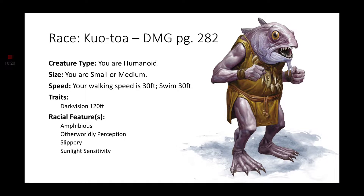Something I imagine for a Kuo-toa encounter: your party decides to do a stealth mission — everybody's invisible — and they walk into a chamber with chanting coming from it. There's a bunch of Kuo-toa with their arms raised, chanting to a statue of their god. As the players stop, so does the chanting. The Kuo-toa's arms lower, and suddenly their heads snap toward the entrance of the chamber. They know that you are here, and since this is the only entrance, they know where you are.